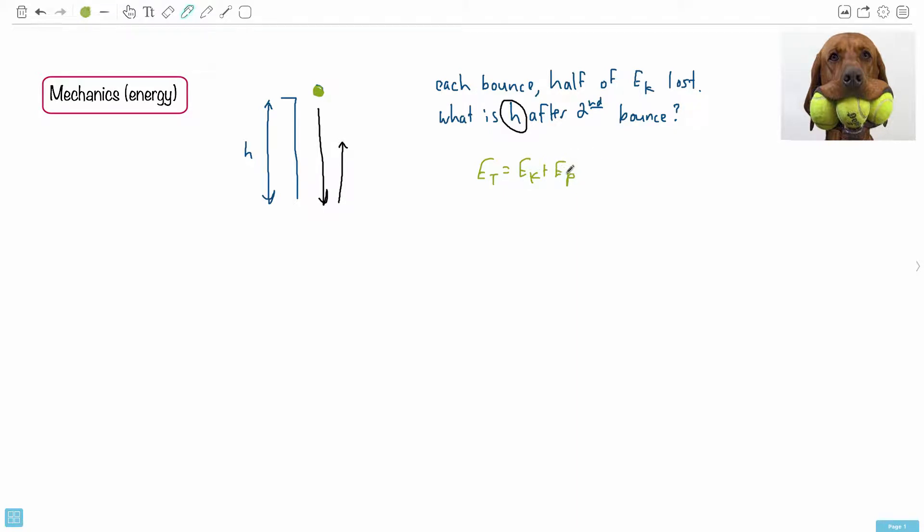And remember, potential contains a term MGH. So really what this means—this is the key thing—is that because it lost half of its kinetic energy, the height goes down by half as well.